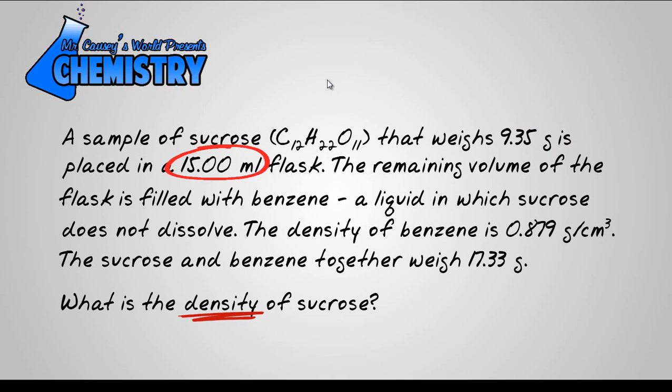Now notice it's not 15 milliliters of sucrose. It's in a 15 milliliter flask and the remaining volume is filled with benzene. Benzene has a density of 0.879 grams per cubic centimeter or milliliter. Remember a cubic centimeter is 1 milliliter and the sucrose and the benzene together weighs 17.33 grams. Now all this information together is what we're going to use to solve this and determine the density of sucrose.